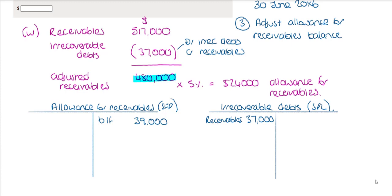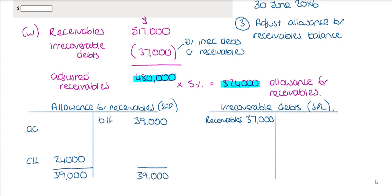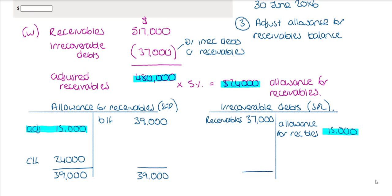We have calculated the closing allowance for receivables at 5%, which is $24,000. This will be the carry forward balance in the allowance for receivables account. I need to work out what adjustment is required so that both sides of the ledger account equal $39,000. The adjustment for allowance for receivables is $15,000. This adjustment will be a debit to the allowance for receivables account, with the other side written off to the statement of profit and loss, shown as a credit balance in the irrecoverable debts account.